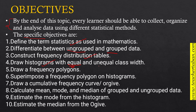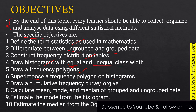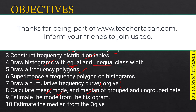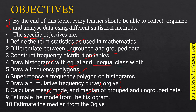At this level we shall look at histograms of different class widths, not just equal class widths as in lower classes. We shall also cover frequency polygons and how to draw them — including superimposing a frequency polygon on top of a histogram. We shall draw cumulative frequency curves called ogives, and calculate the mean, mode, and median for both grouped and ungrouped data, as well as estimate them from histograms and ogives.